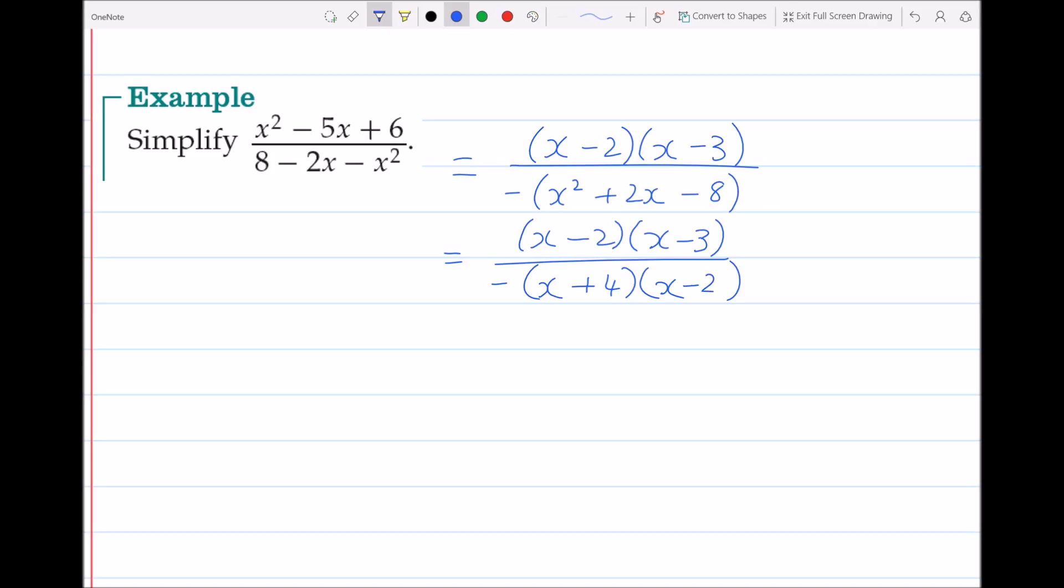You can see here that we end up with a bracket on the top that is the same as a bracket on the bottom. In this situation, those brackets cancel out because anything divided by itself is always 1.